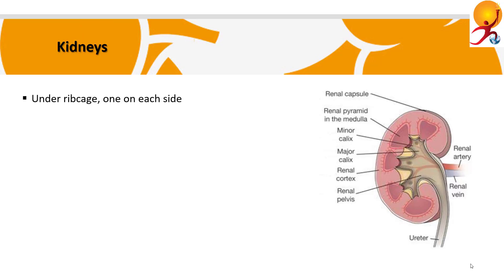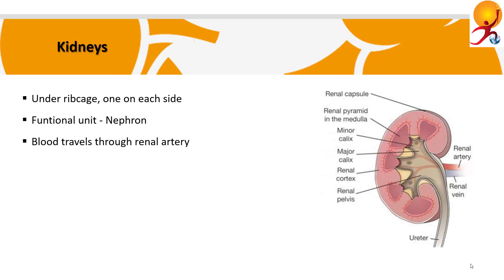The kidneys are located just under the ribcage in the back, one on each side. The right kidney is located just below the liver, so it's a little lower than the left one. The functional unit of the kidney is a nephron. Each kidney has around 1 million nephrons that work as tiny filtering units which remove harmful substances from the blood. Each of these nephrons contains a filter called the glomerulus, which contains a network of tiny blood vessels known as capillaries.